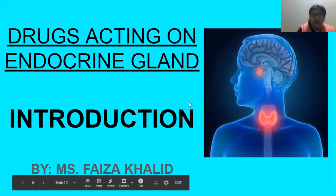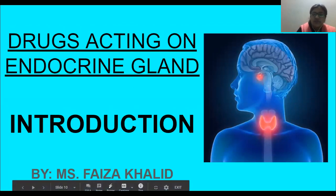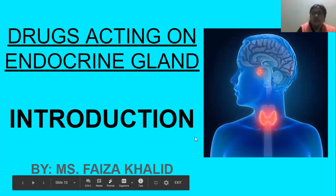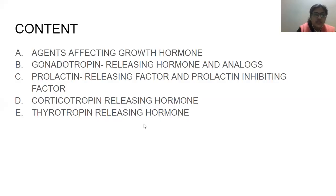The topic we are going to start today is endocrine glands. In the previous session I gave you an introductory lecture where we discussed what kind of hormones and endocrine glands exist. Today we are going to dig deep into one or two of them — specifically agents affecting growth hormone, gonadotropin releasing hormones and analogs, prolactin releasing factor, and prolactin inhibiting factor.